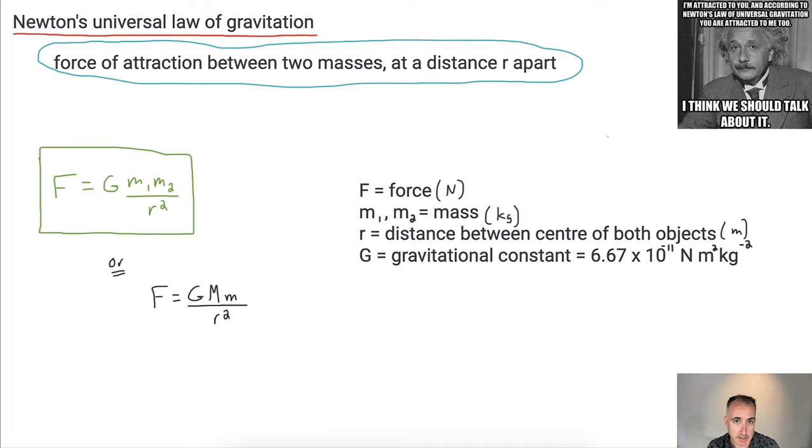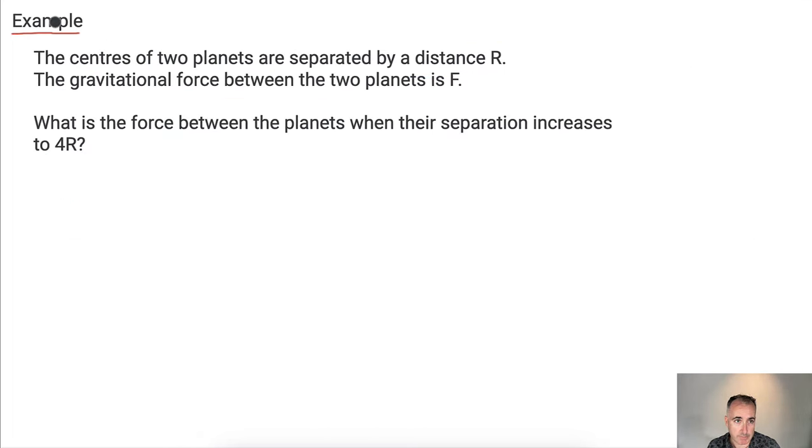So let's put this into context and do an example. We've got the center of two planets that are going to be separated by distance R. So there's one planet, there's the other one. It doesn't matter which one is which. We can call this big M, we can call this little m. I'm going to have the distance right here between them, it's going to be R. We're told that the force of attraction between them is F. And now the question is, what's the force between them if their separation increases to four times that?